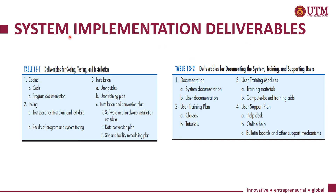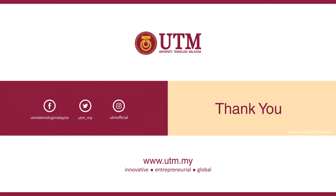This slide summarizes the system implementation deliverables in two tables. Table 13.1 lists the deliverables from the first three activities — coding, testing, and installation — while Table 13.2 lists the deliverables from the other activities, which are documenting the system, training, and supporting users. For example, the deliverables from coding will be code and program documentation, while the deliverables from documentation will be system documentation and user documentation. This is the end of part one of topic six — thank you very much for listening.